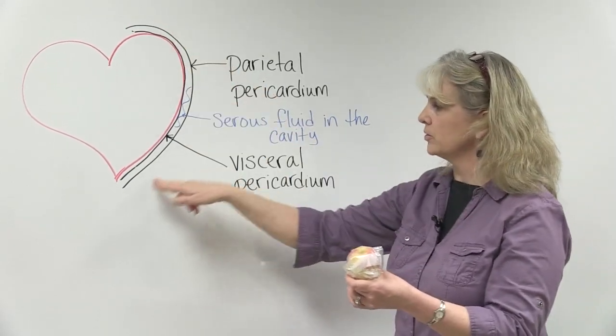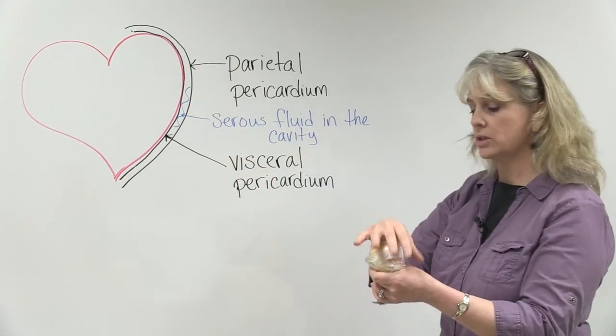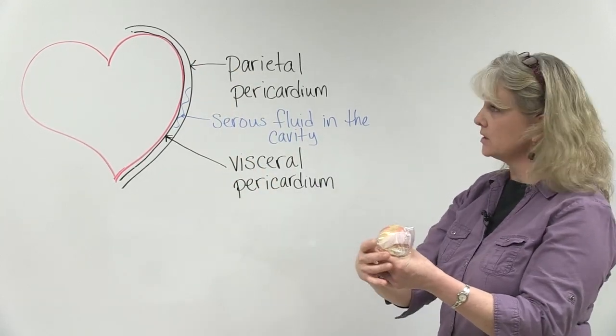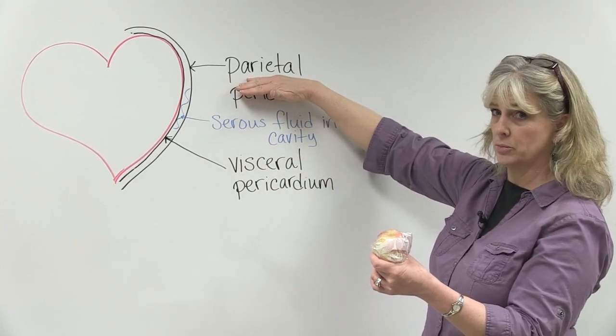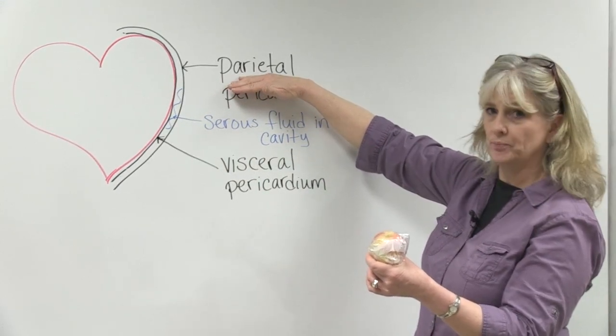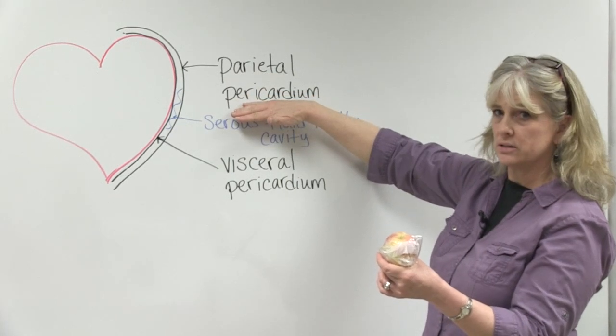Then you see the outer membrane around here, and that covers the wall of the entire organ and area, so we call that one the parietal membrane. Pariet means wall. Parietal pericardium in this case then.